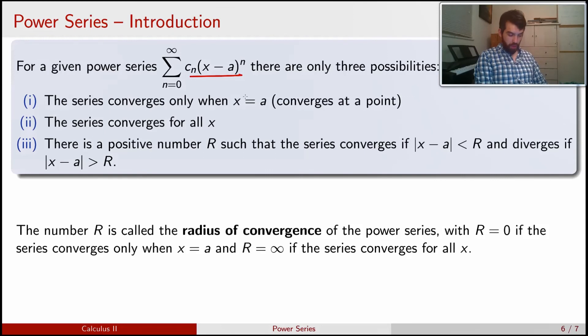If I have a power series, so a series that has a function and it looks at this form, some c_n times (x - a) to the power of n, then the three possibilities are: it converges only at a point, we saw an example of that; it converges everywhere, that was our very first example; and this is the interesting one. There is some number r, some radius r. And we're going to say that it converges if |x - a| is less than r and diverges if |x - a| is bigger than r.